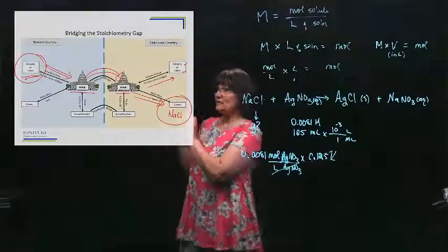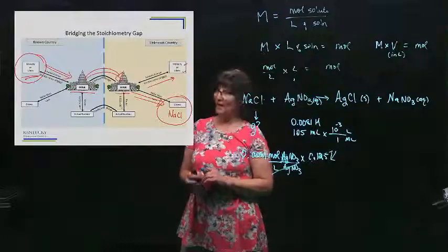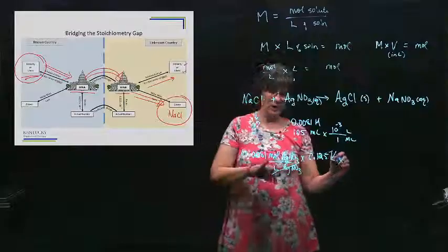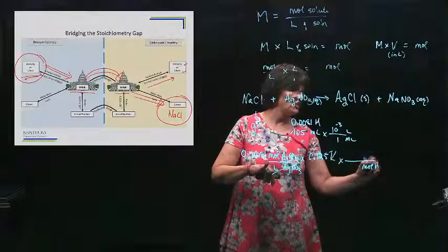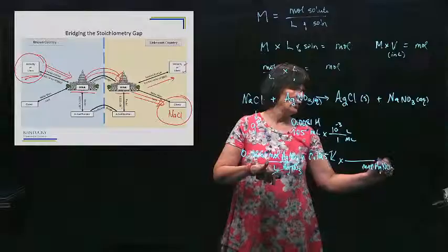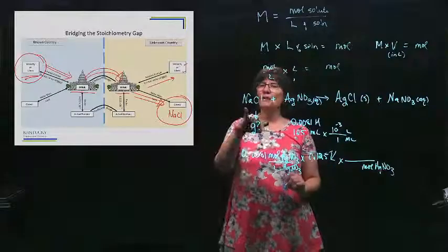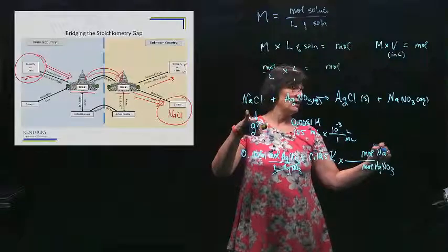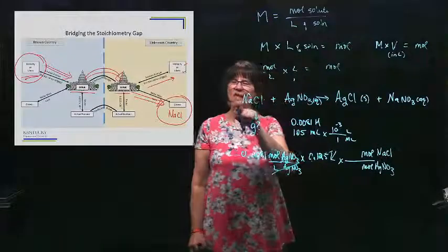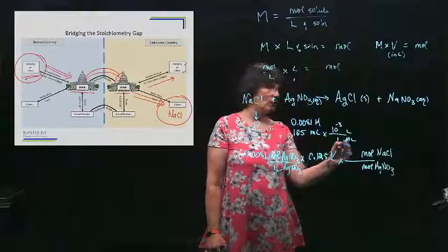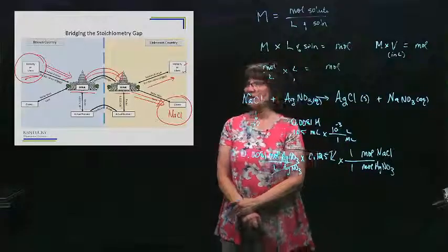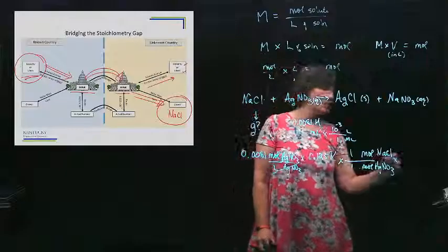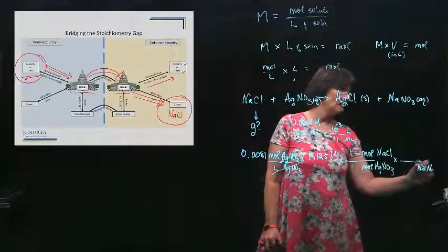Now, that gets me into moles on the known side. I'm ready to go over the bridge to moles of what I'm looking for. So what am I trying to cancel? Moles of AgNO3. Where am I trying to go? To information about the sodium chloride. So moles of NaCl. My balanced equation tells me one of these reacts with one of those. So I've gone over the bridge.